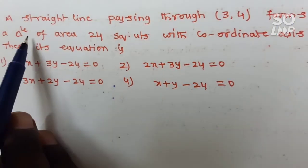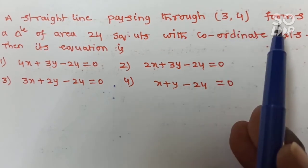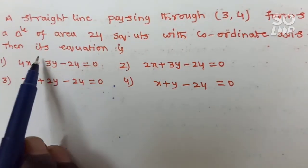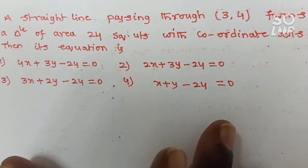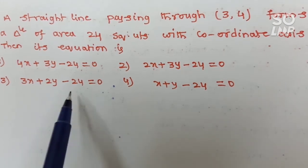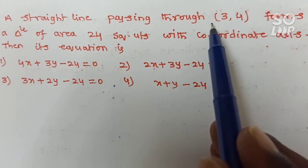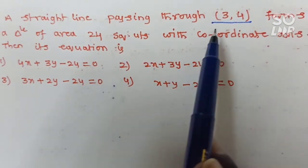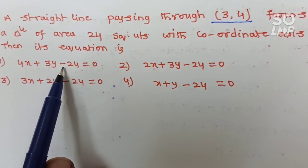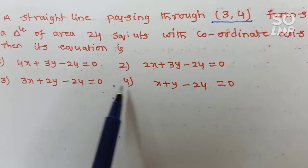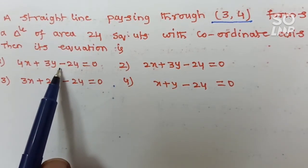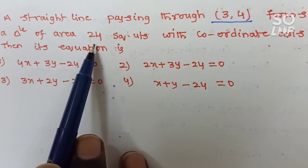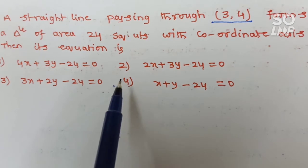Next problem: a straight line passing through (3, 4) forms a triangle of area 24 square units with the coordinate axis. Find the equation. This problem can be done in two methods — one is the verification method: substitute (3, 4) into each option to check which is satisfied, then use the area formula to confirm. If more than one option is satisfied, use the area condition to identify the correct answer.